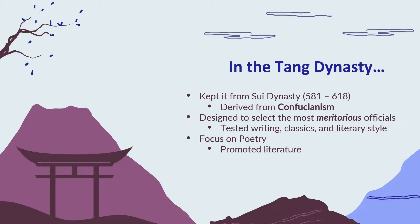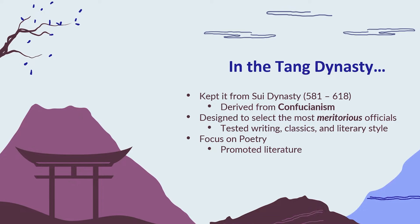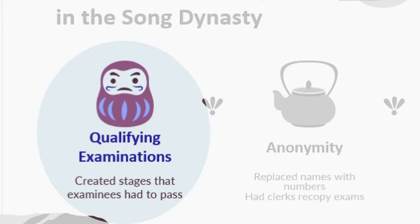The Tang dynasty specifically liked to focus on poetry and promoted literature, which is essentially why there's so much literature from this dynasty. This was especially apparent in the Song dynasty, which followed the Tang dynasty, and for three main reasons they actually made the system better. First, they created qualifying examinations — staged levels that examinees had to pass before reaching the final stages where officials were selected.